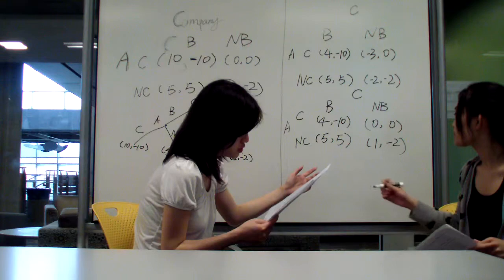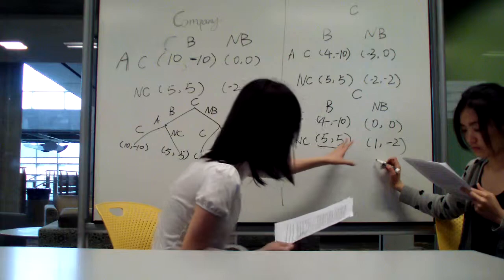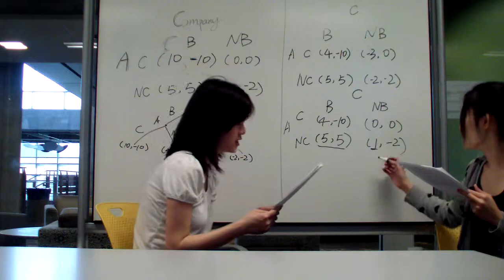We can see here, we change the payoff from minus 2 to 1. And that will also make NC and B an equilibrium.